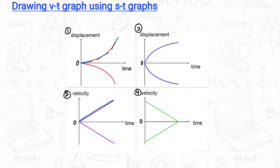Below the time axis, the gradient still increases, but it increases in the negative direction. Similarly, in the second graph, the gradient will decrease but in the positive direction, so the velocity is positive and decreasing. And in the region below the time axis, the gradient still decreases; therefore, the velocity decreases in the negative direction.